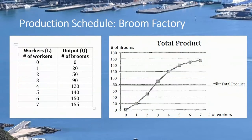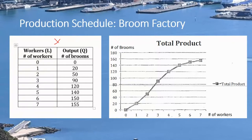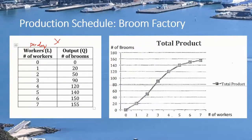Here's a production schedule — some made-up numbers from another textbook that I'm going to follow. On the left-hand side, we've got listed different numbers of workers that might be employed in this firm — the number of workers per day. We could hire zero workers, one, two, three, four, five, all the way up to seven. Very simple schedule of workers.